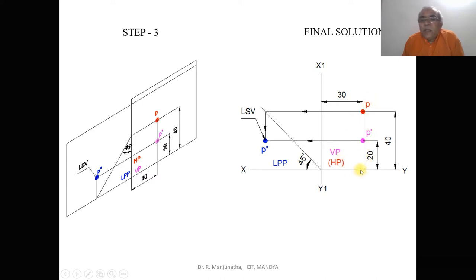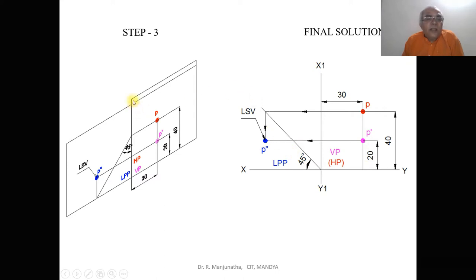Since VP is above the XY line, 20 mm above XY line is considered for the front view. The distance behind LPP is seen in both HP and VP; since VP and HP are both above the XY line, we measure 30 mm from the X1Y1 line and mark it. This vertical line is the X1Y1 line, and the horizontal line is the XY line.